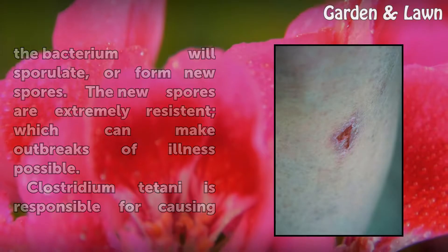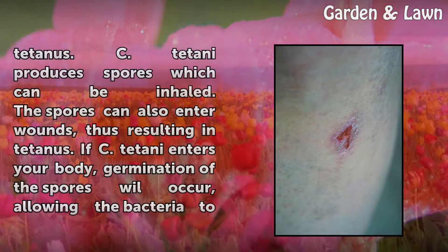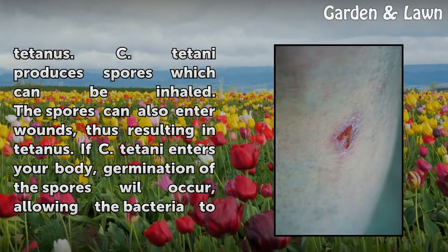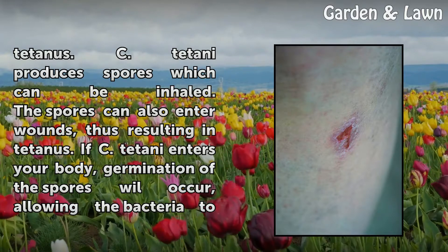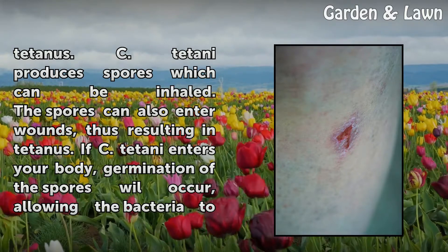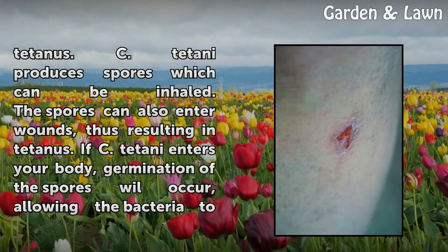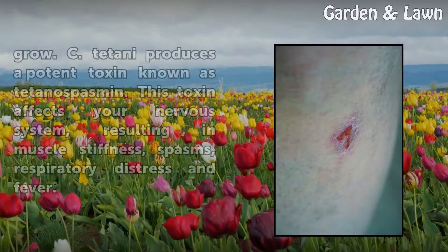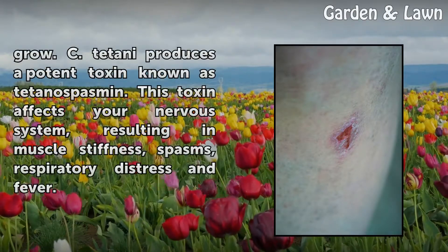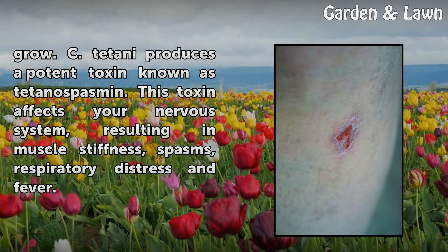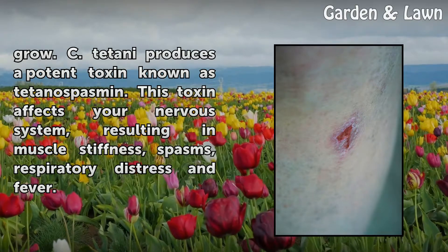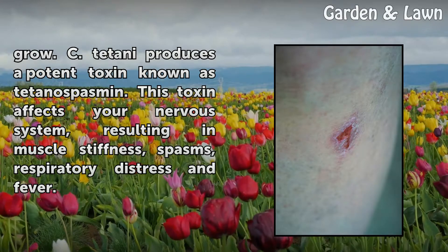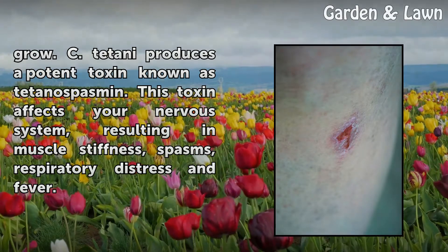Clostridium tetani is responsible for causing tetanus. C. tetani produces spores which can be inhaled. The spores can also enter wounds, thus resulting in tetanus. If C. tetani enters your body, germination of the spores will occur, allowing the bacteria to grow. C. tetani produces a potent toxin known as tetanospasmin. This toxin affects your nervous system, resulting in muscle stiffness, spasms, respiratory distress, and fever.